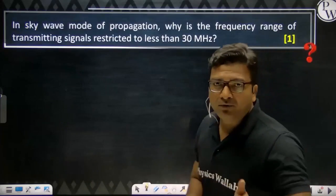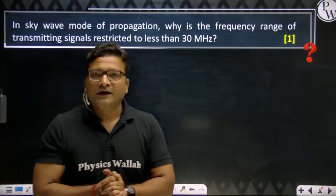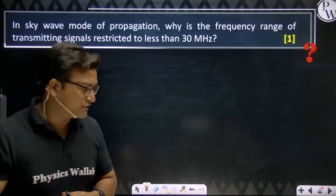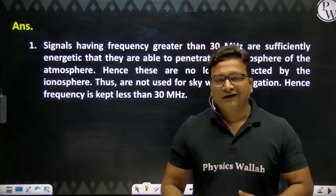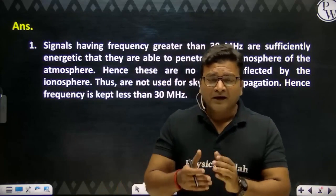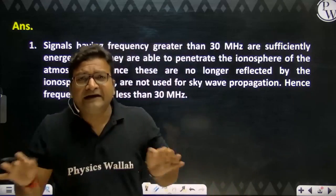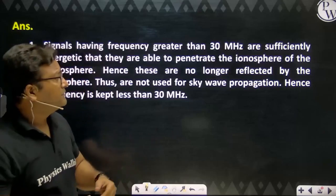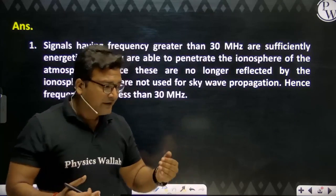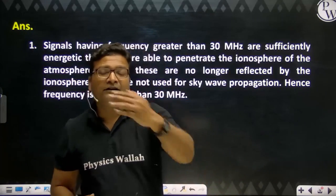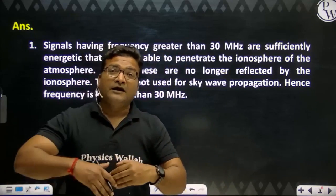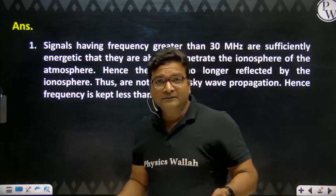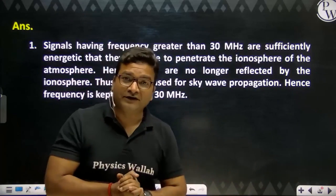For the next one mark question: sky wave mode of propagation — why is the frequency range less than 30 MHz? This is a purely theoretical question that doesn't require any formula or diagram, so keep it simple. The topper has written that signals having frequency greater than 30 MHz are not suitable because they can penetrate the ionosphere. Since they are not reflected, they cannot be used for communication. That simple answer is just sufficient.